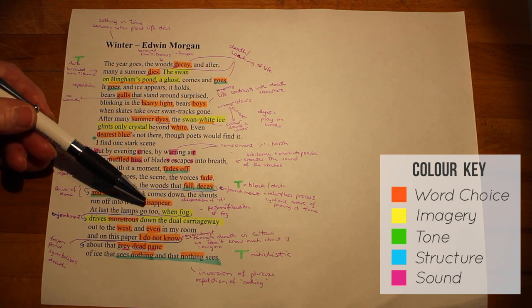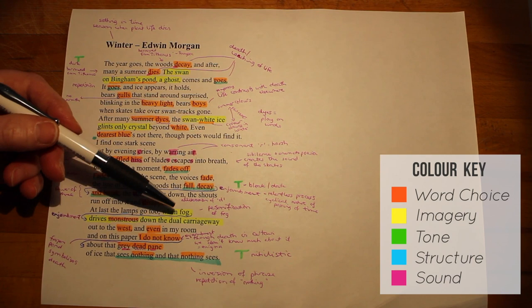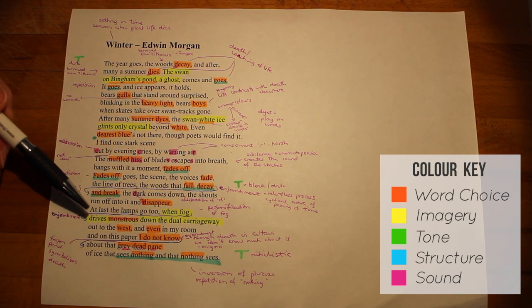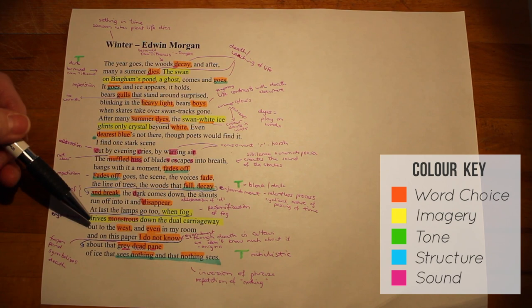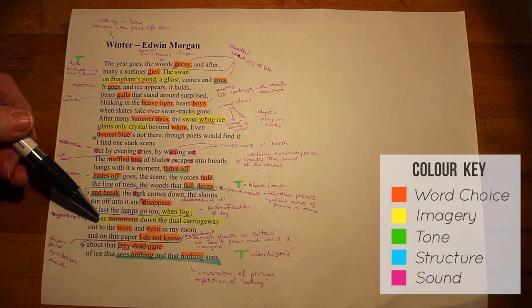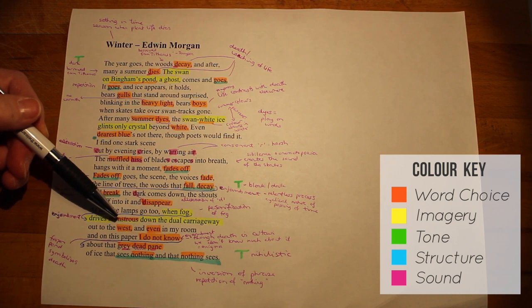The very negative and despondent tone is then accentuated by the use of a superb image. When fog drives monstrous down the dual carriageway, this is almost comparing fog to a dangerous driver out on the public roads. And we know that fog does cause accidents, just like dangerous drivers do. So it's a superb image. And the word choice of monstrous here suggests that the fog is something sinister and frightening.